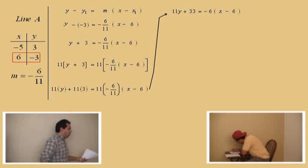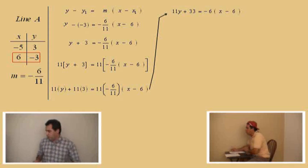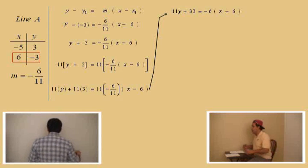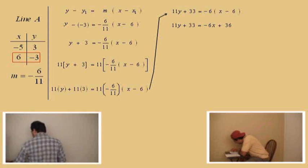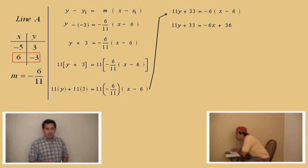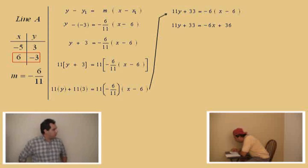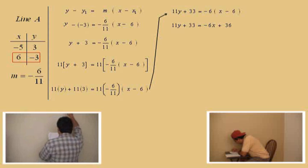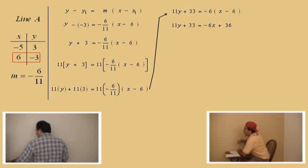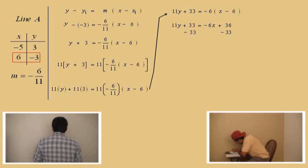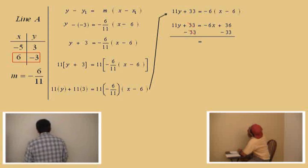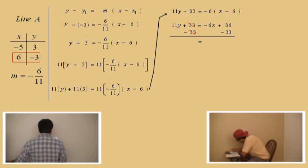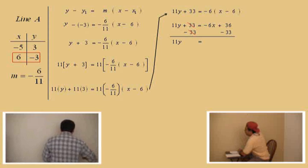Let's list the equation. You should be working this out, and all of you at home better be working these out too. Charlie, what's our next step? Distributive property. Very good. So we get negative six x plus thirty-six. Now, remember, we're solving this equation for y — we're trying to get to the y equals mx plus b form. What do I have to do, Charlie? We've got eleven y plus thirty-three on the left. What are we going to do to both sides? Subtract thirty-three. Bring down your bar and equal sign. What's on the left-hand side, Charlie? Eleven y. On the right-hand side? Negative six x plus three.